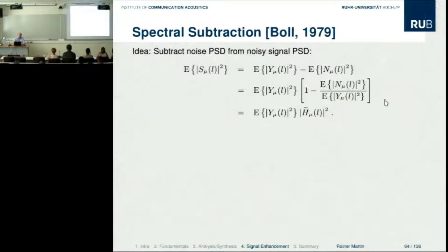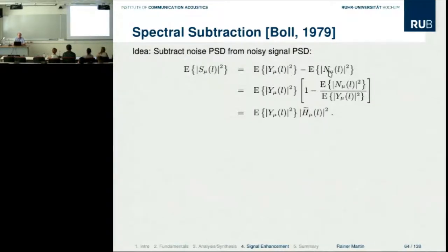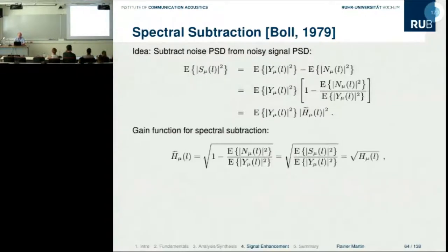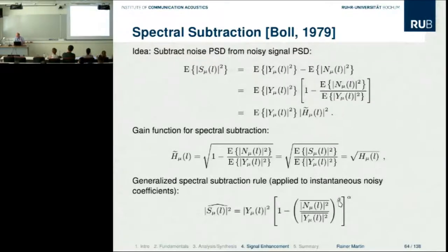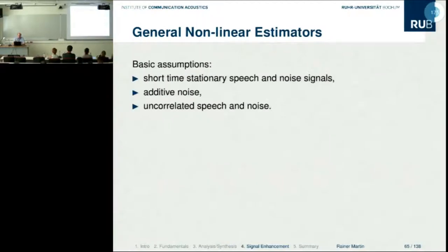Another algorithm worth mentioning is spectral subtraction, dating back to Boll in 1979 — one of the first attempts to produce an enhanced speech signal. The idea is to subtract the power spectral density of the noise from the power spectral density of the noisy signal to recover the clean PSD. This leads to a multiplicative filter gain applied to the input power spectrum. There are many variations; it is also related to the Wiener filter — essentially it is the square root of the Wiener filter — and can be generalized with different exponents.